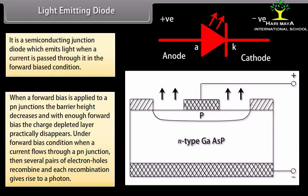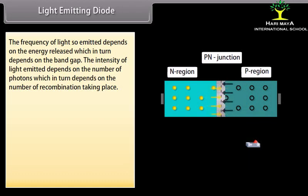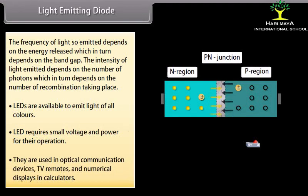Under forward bias, when current flows through a P-N junction, several electron-hole pairs recombine and each recombination gives rise to a photon. The frequency of emitted light depends on the energy released, which depends on the band gap. The intensity depends on the number of recombinations. LEDs are available in all colors, require small voltage and power, and are used in optical communication devices, TV remotes, and numerical displays in calculators.